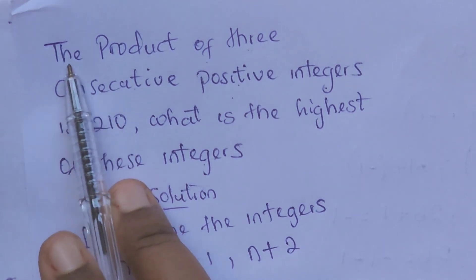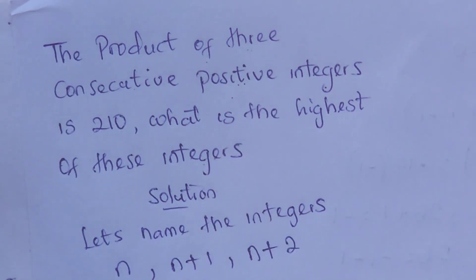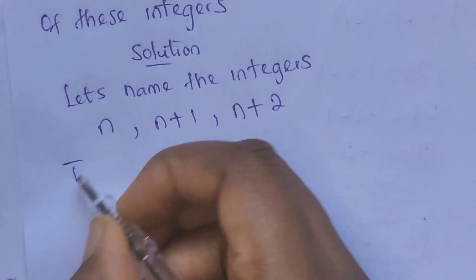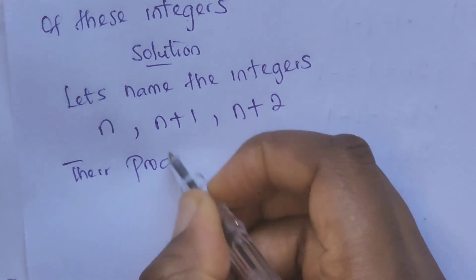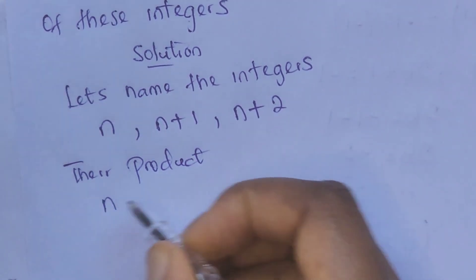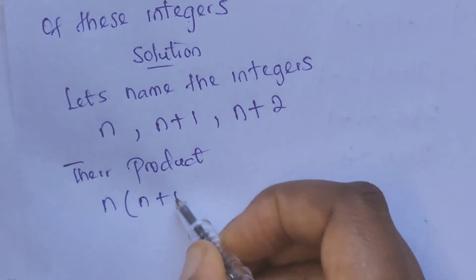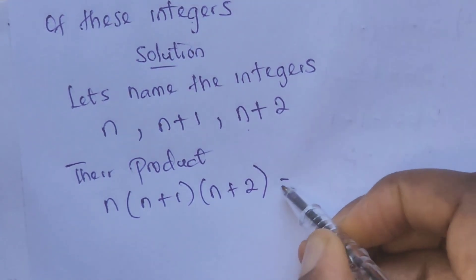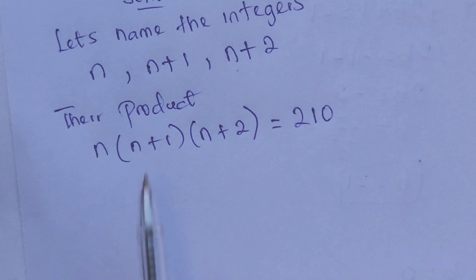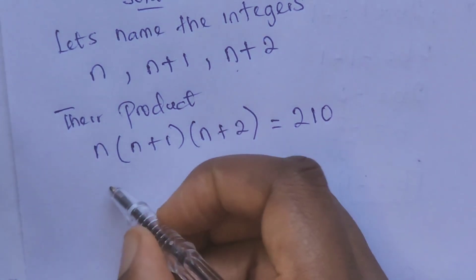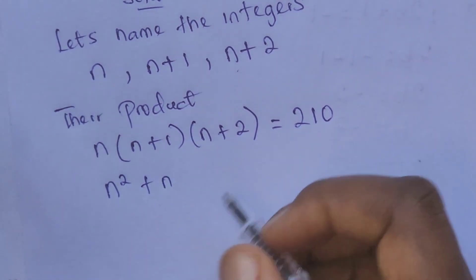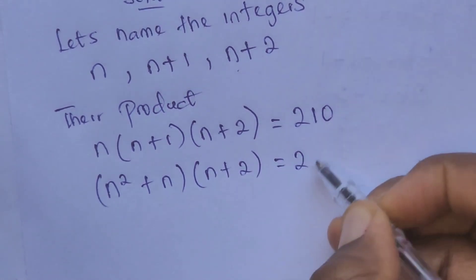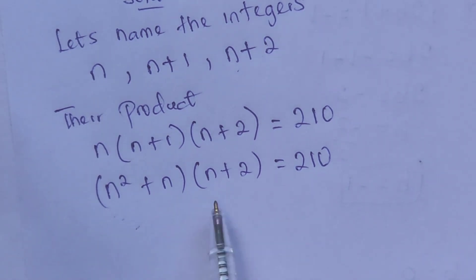We are told the product of three consecutive positive integers equals 210, so we multiply these three integers. The product will have n times (n plus one) times (n plus two) equal to 210. Let's open up the brackets: we have n squared plus n times this, equal to 210.